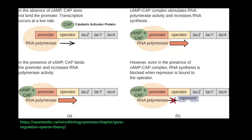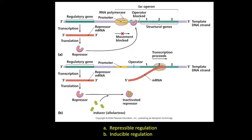Even when glucose concentration is low in the cell and the cAMP-CAP complex forms and binds to the promoter, if the repressor is present at that very moment, transcription will not occur. So whether glucose is absent and the cAMP-CAP complex has formed, that doesn't matter unless the repressor is also removed from the picture.